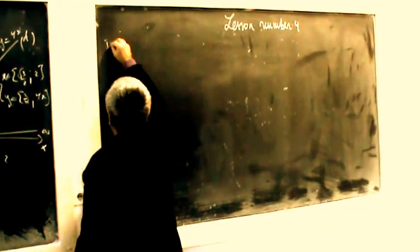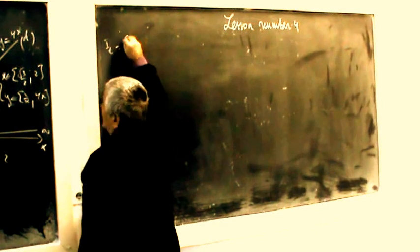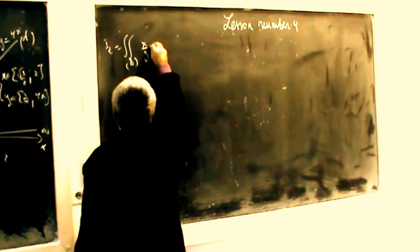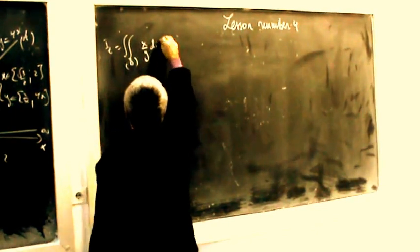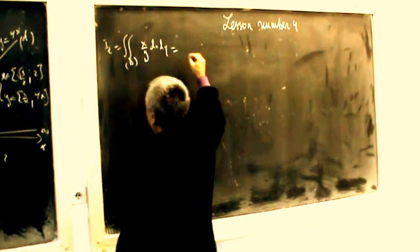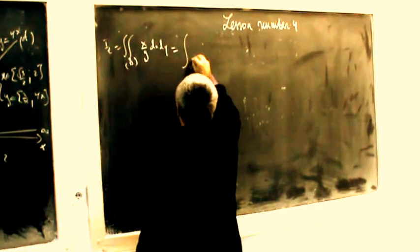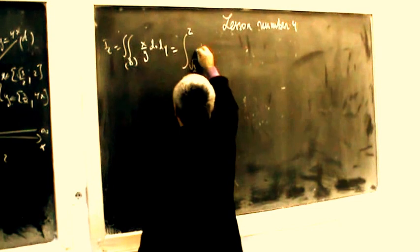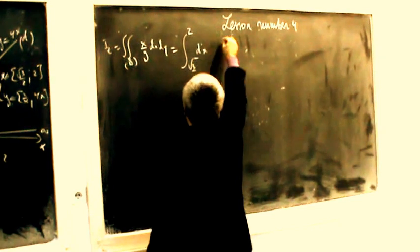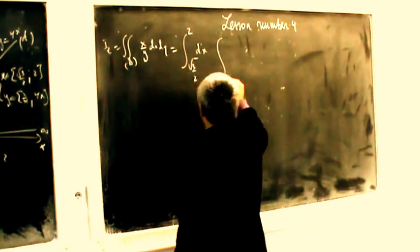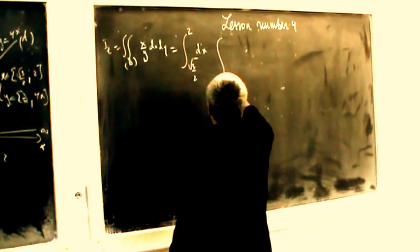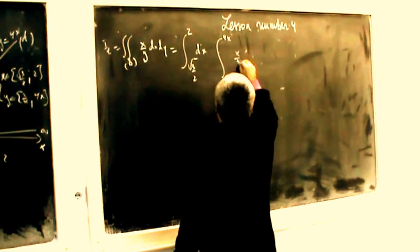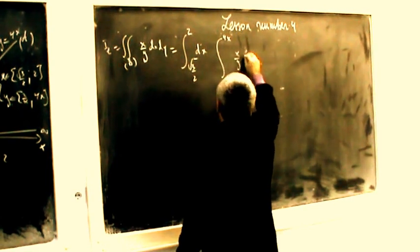E total equals the double integration of x divided by y, dx dy. The outer integral runs from radical 3 divided by 2 to 2, dx. The inner integral runs from 3 divided by x to 4x of x divided by y, dy.